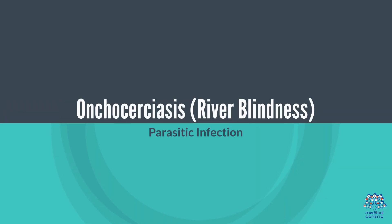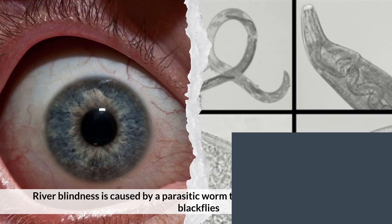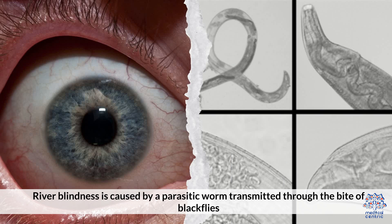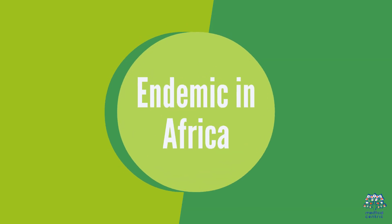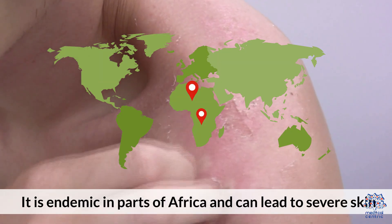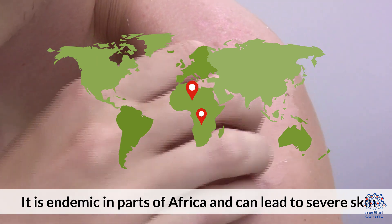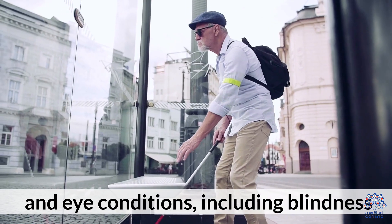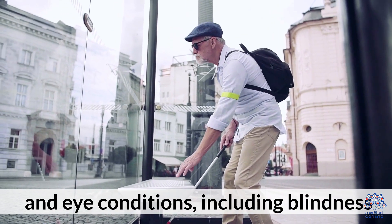6. Onchocerciasis — River Blindness. River blindness is caused by a parasitic worm transmitted through the bite of black flies. It is endemic in parts of Africa and can lead to severe skin and eye conditions, including blindness.